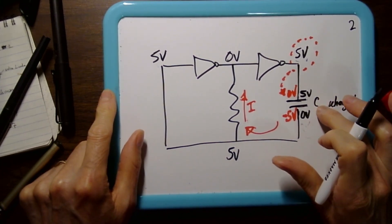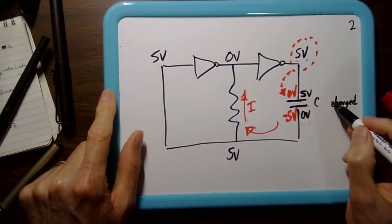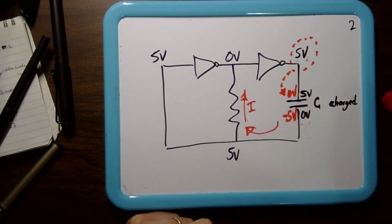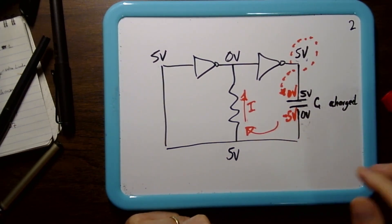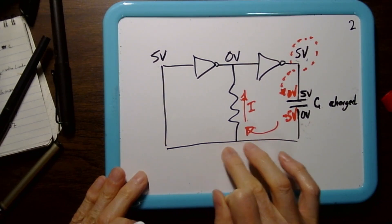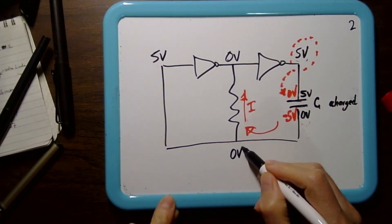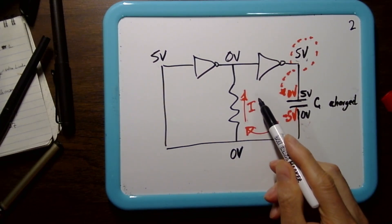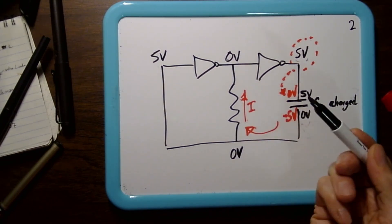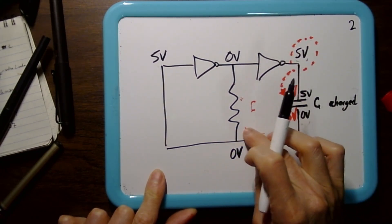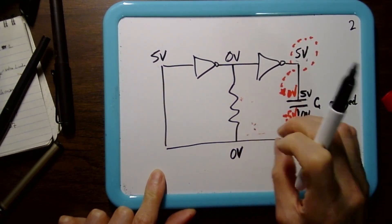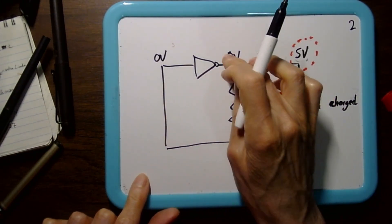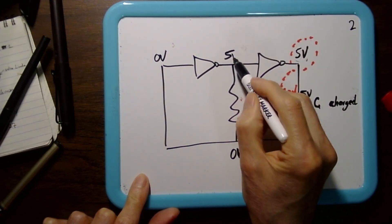The capacitor is going to be fully charged. Once the capacitor is fully charged, the current stops — so there's no more current. We have 0 volts here, and the input changes to 0 volts. But remember, this is a NOT gate, so that goes to 5 volts. And this goes to 0.